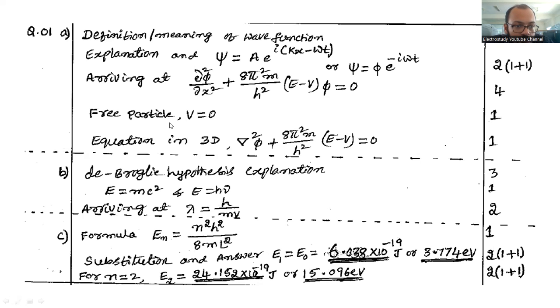You are supposed to derive this expression, you will be getting four marks. For free particle the condition you have to apply is V=0. For 3D that also del square ψ plus 8π²m by h² into (E-V)ψ=0. You have to elaborate each term, it carries the weightage of one mark.